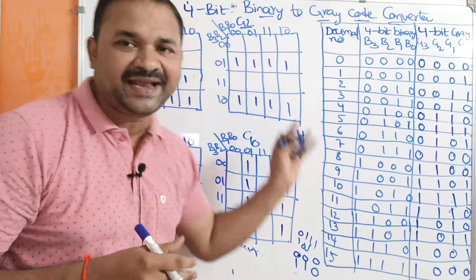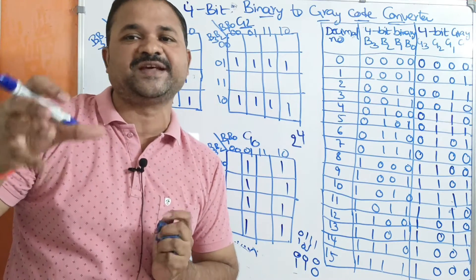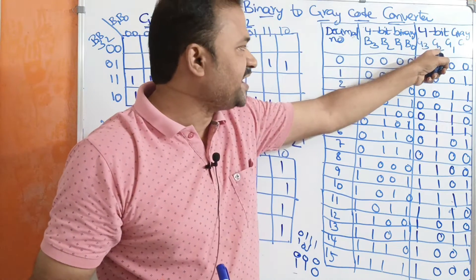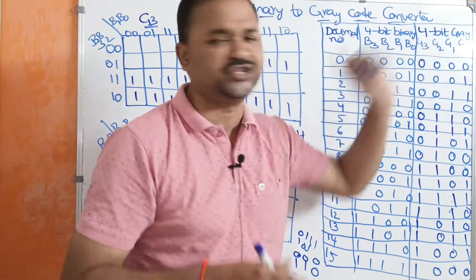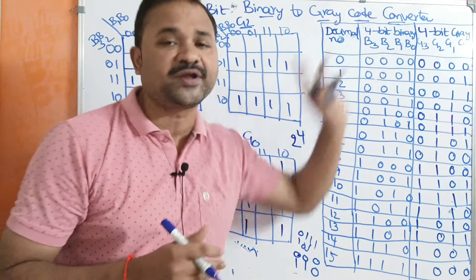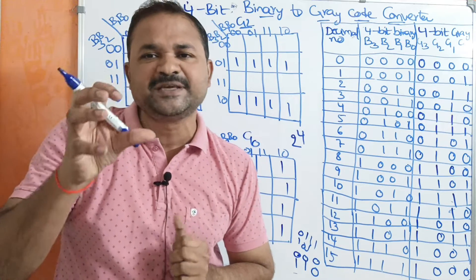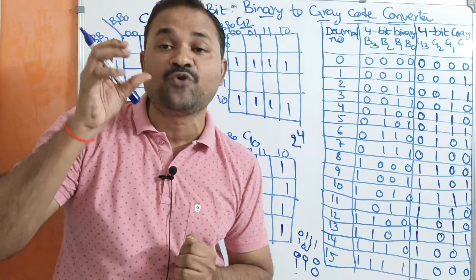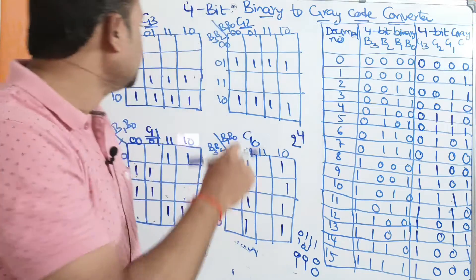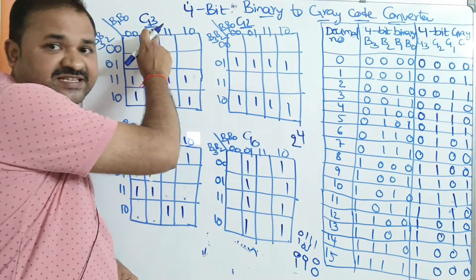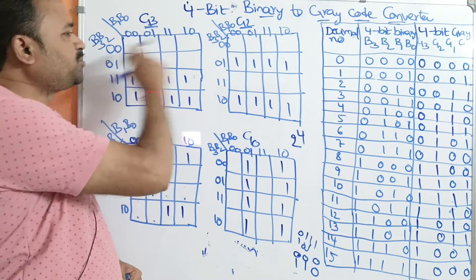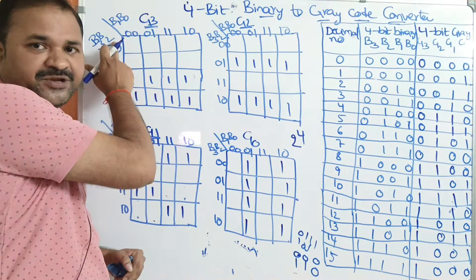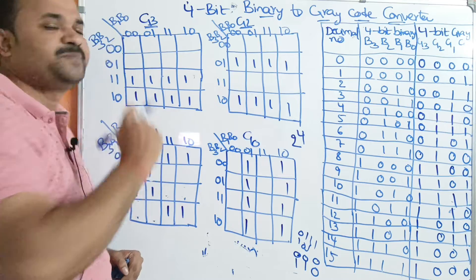Now we have to derive the logical expressions for the outputs G3, G2, G1, and G0. Here we have 4 inputs, so in order to simplify the expressions it is better to use a 4-variable Karnaugh map. We are first deriving the expression for G3. The inputs are B3, B2 on one axis and B1, B0 on the other.